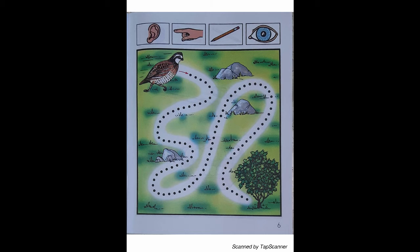Place your finger on the arrow to begin drawing. As you draw the line, do not leave the pencil off the paper until you get to the berry bush. With your eyes three times, slowly follow the lines you have drawn from the quail to the berry bush.